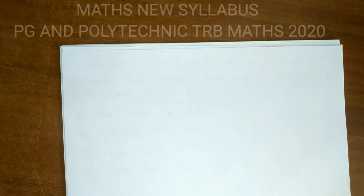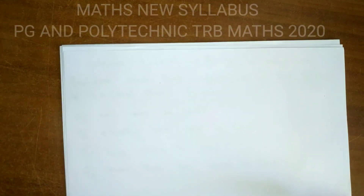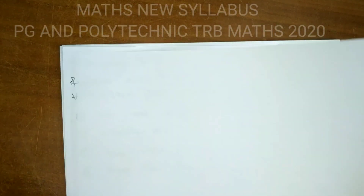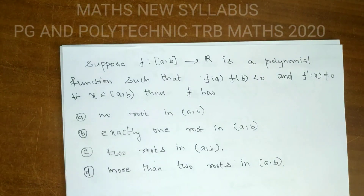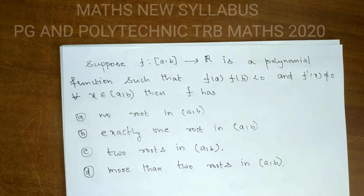Ani varakku manakkam. If this is a PG or TRB exam question, this is an important problem. The problem is: suppose f is a function from the closed interval [a, b] to R, which is a polynomial function, such that f(a)·f(b) < 0 and f'(x) ≠ 0 for any values of x.